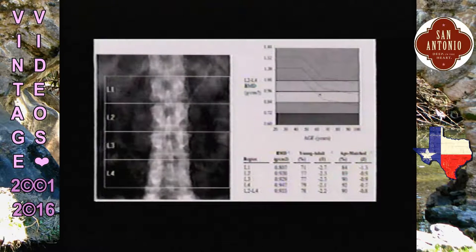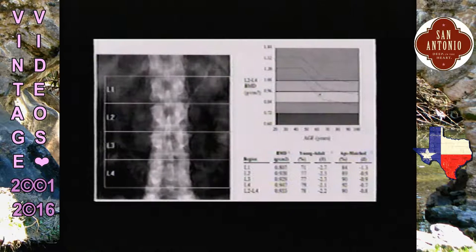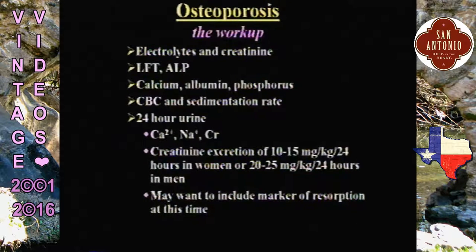So what do you do if a 60-plus-year-old woman comes in with a T-score of minus 2.2 on her spine? That's the sort of expected bone loss you would see for her age and sex. You want to do a basic workup, making sure she doesn't have renal insufficiency, liver function abnormalities, or asymptomatic hypercalcemia. Hyperparathyroidism is a very important cause of bone loss — checking serum calcium is an easy screening tool.